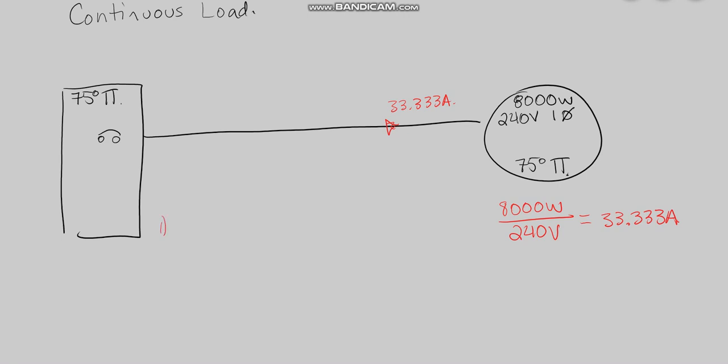When we start our branch circuit, we are going to ask ourselves, number one, is this continuous or non? We have determined in this video that it is a continuous load based off of the fact that it's not given information. The next question we would ask ourselves, now that we've determined that it is a continuous load, is the equipment rated for 80% or 100%? If it's rated for 100%, you can load it right up to 100% and it shouldn't be an issue with that thermal element. However, because it doesn't tell us in the question, we would have to assume worst case scenario, which is that the equipment is only rated for 80%.